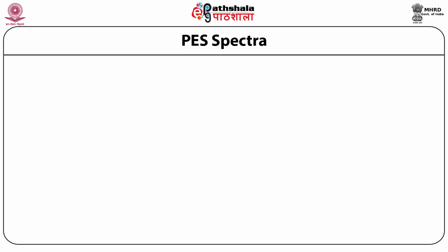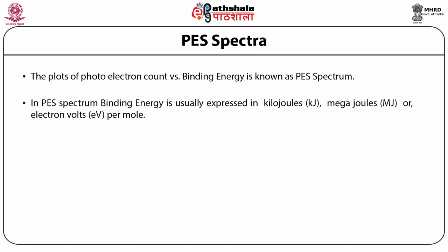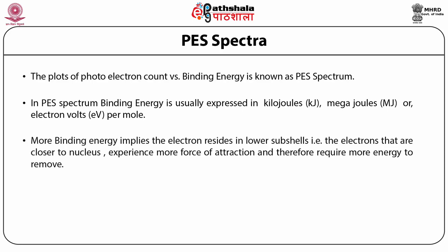The plots of photoelectron counts versus binding energy (BE) are known as the photoelectron spectrum. Binding energy is usually expressed in kilojoules, megajoules, or electron volts per mole. More binding energy implies the electron resides in lower subshells — that is, electrons closer to the nucleus experience more force of attraction and therefore require more energy to remove.